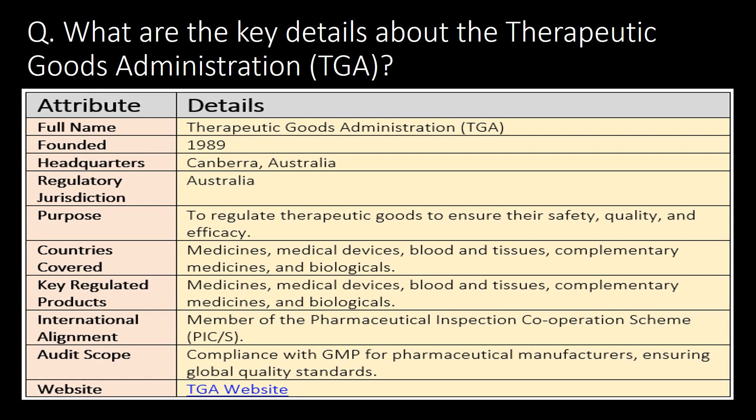What are the key details about the Therapeutic Goods Administration, that is TGA? You can refer to the bullet table for key attributes about TGA, including full form, when it was founded, its headquarters, regulatory jurisdiction — that is Australia — purpose, countries covered, and key regulated products.